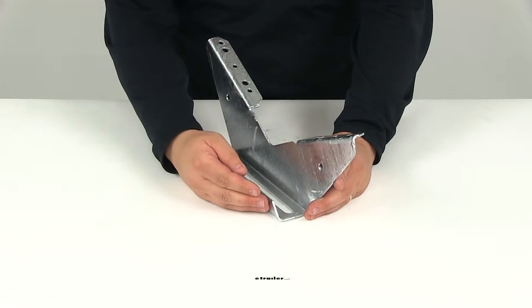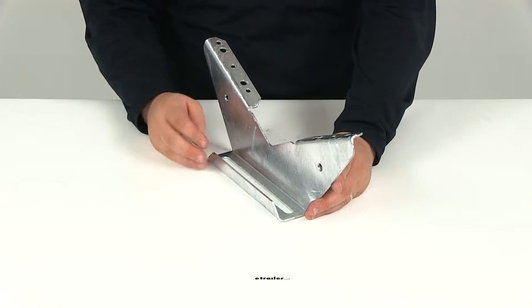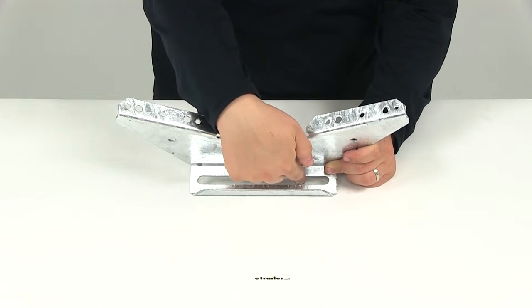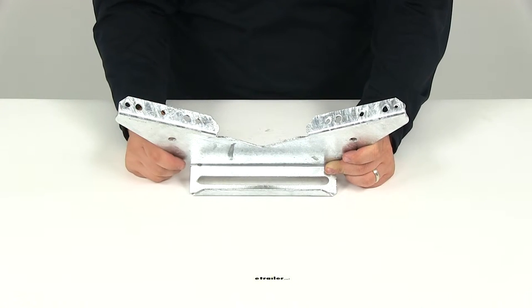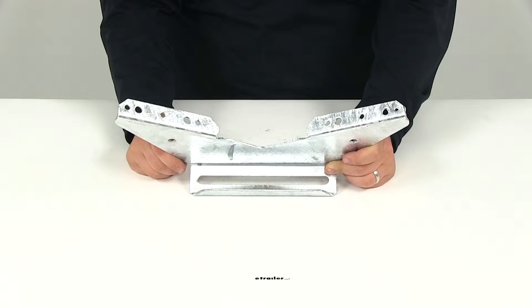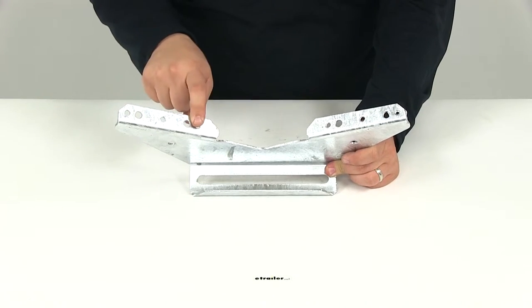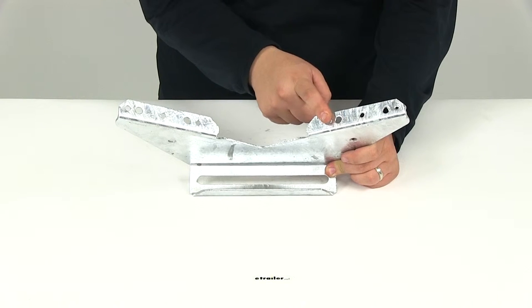The wide base provides a strong mounting platform. You can see here it's got a long seven and a half inch slotted mounting hole that allows for adjustment during installation. It's also got the mount holes up here so you can get the bunk board attached.